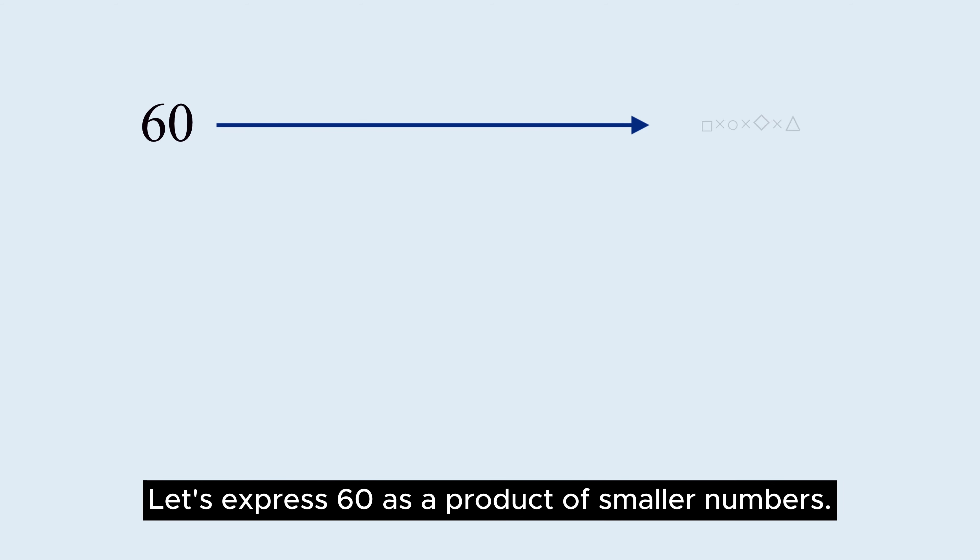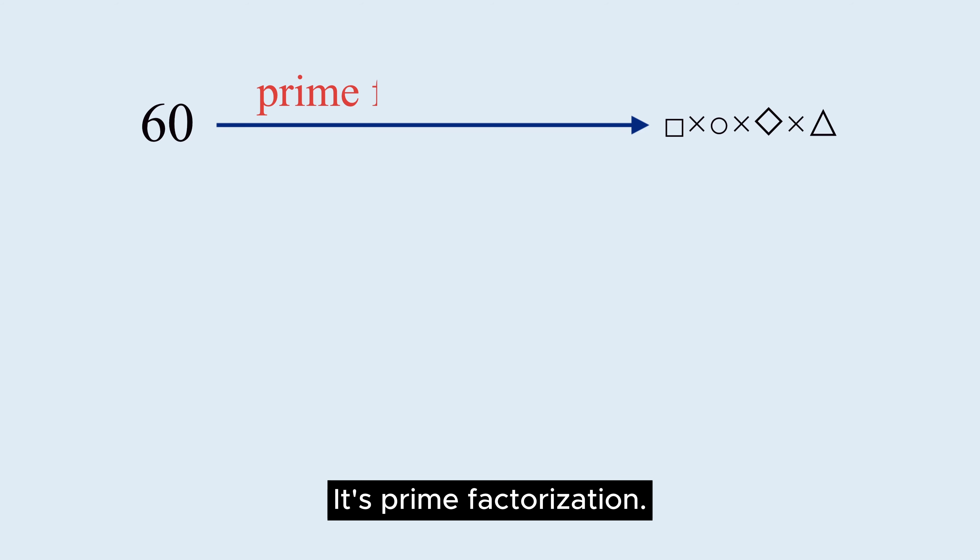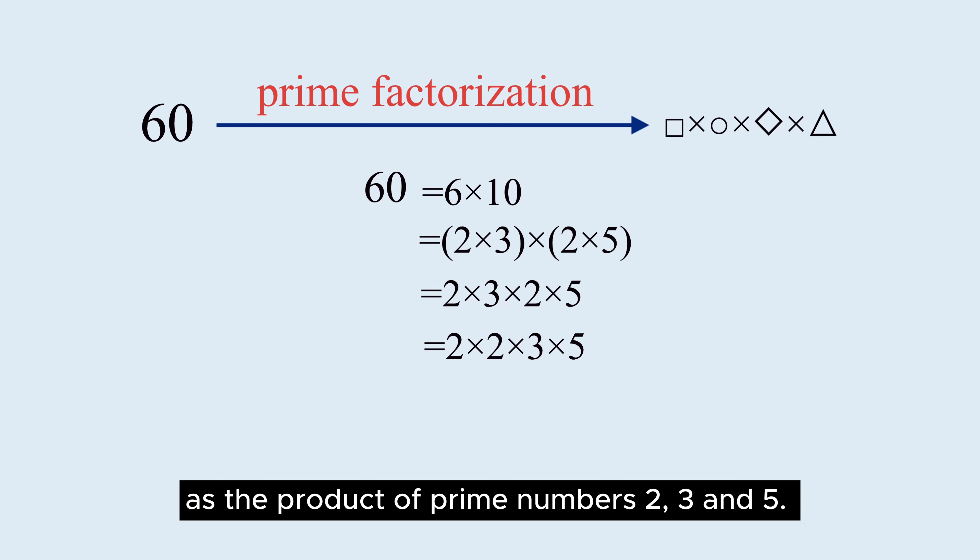Let's express 60 as a product of smaller numbers. It's prime factorization. Ultimately, 60 can only be expressed as the product of prime numbers 2, 3, and 5.